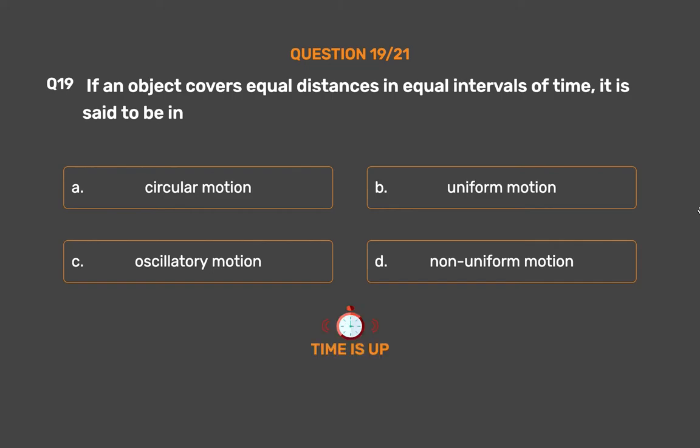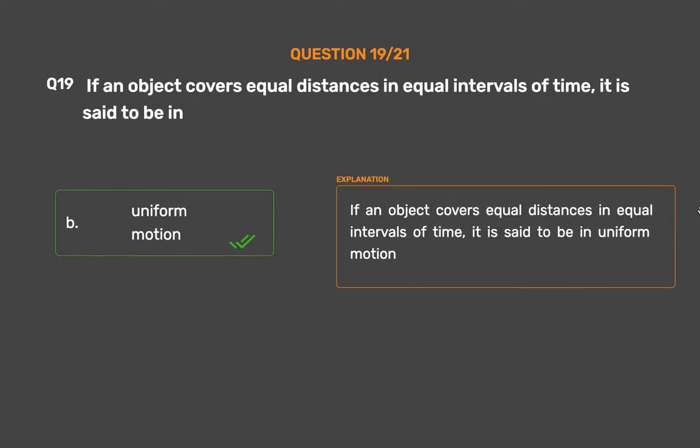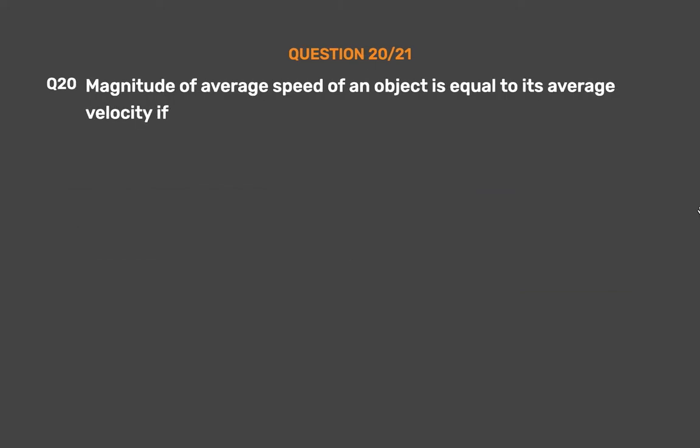The correct answer is Option B: Uniform motion. If an object covers equal distances in equal intervals of time, it is said to be in uniform motion.